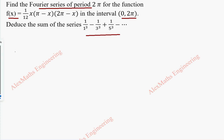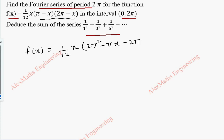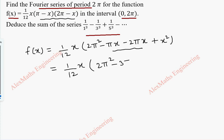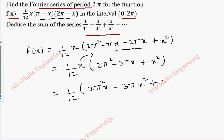First let's take the given function and keep it in the expanded form. We have (1/12) · x · (π - x) · (2π - x). Multiplying these terms: π · 2π = 2π², then minus πx minus 2πx plus x². Combining like terms gives (1/12)(2π² - 3πx + x²), and multiplying x inside: (1/12)(2π²x - 3πx² + x³).